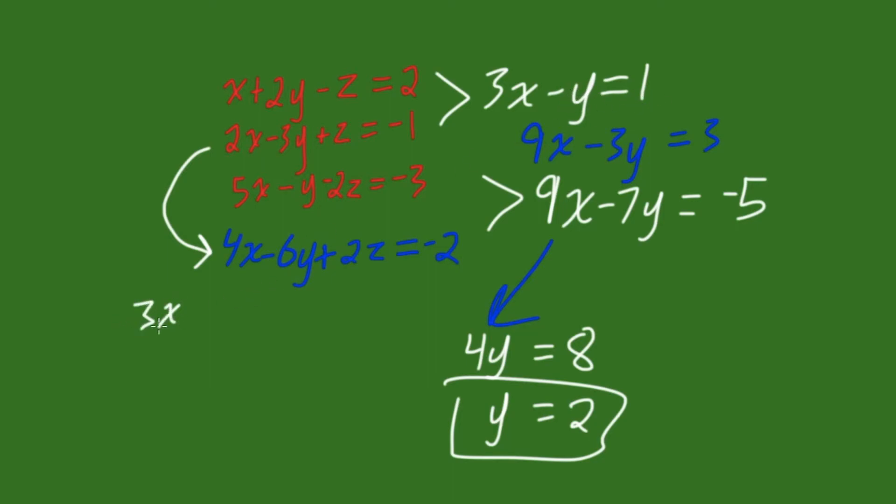So, we have 3x minus... And now we have y here. So, if we substitute 2, we have 2 equals 1. And, now our only variable is x. So, we can solve for x.